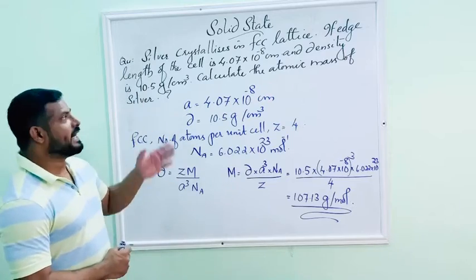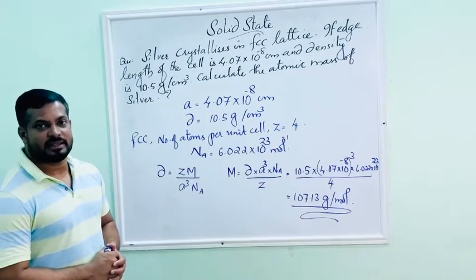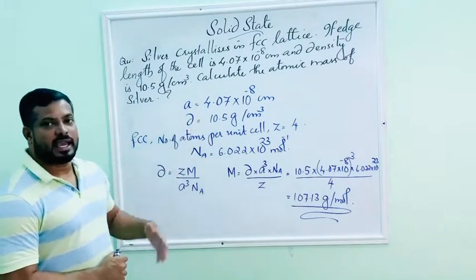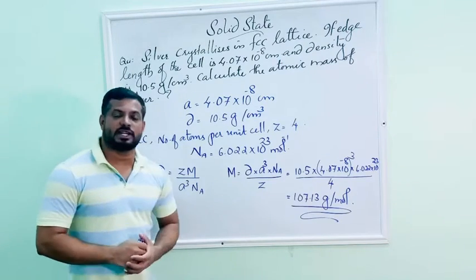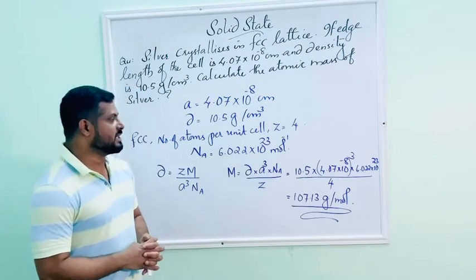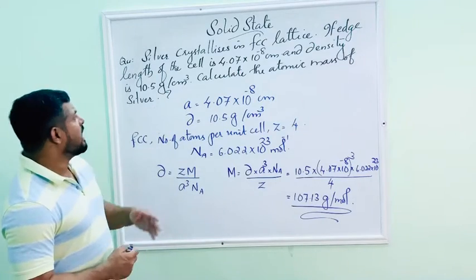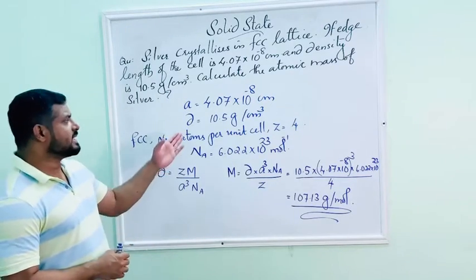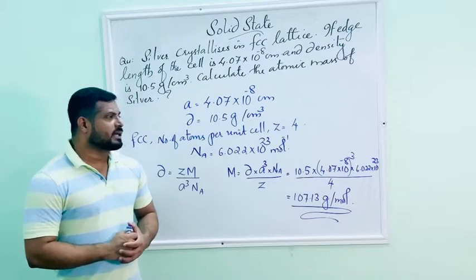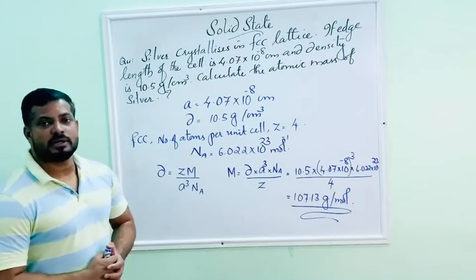Edge length of the cell, that is a equals 4.07 into 10 raise to minus 8 centimeter. And density is given, D equals 10.5 gram per centimeter cube.